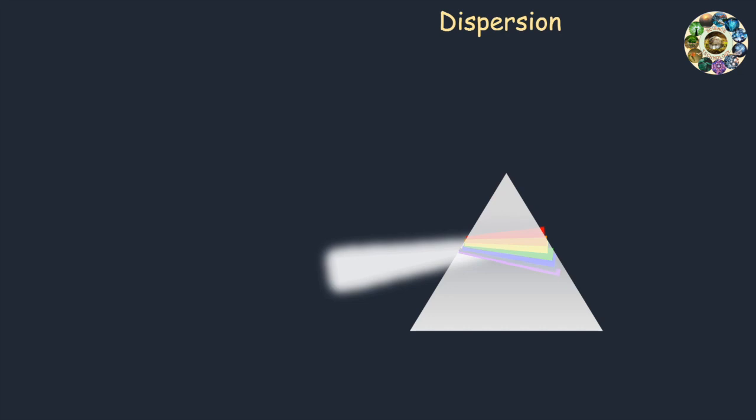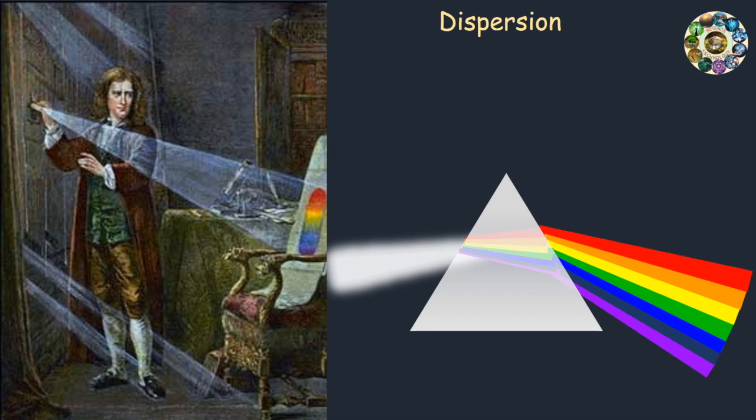More technically, dispersion occurs whenever there is a process that changes the direction of light in a manner that depends on wavelength. Newton was the first to make this experiment by transmitting light through a glass prism. The same process of dispersion of white light causes a rainbow to form.